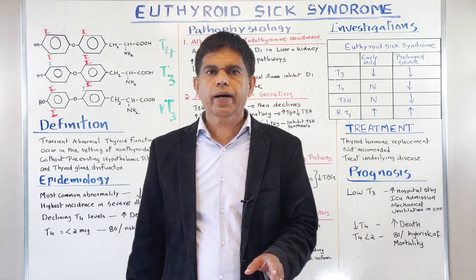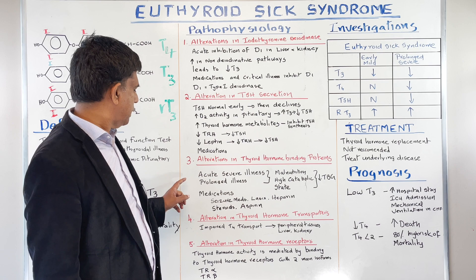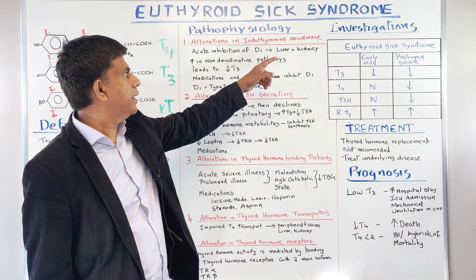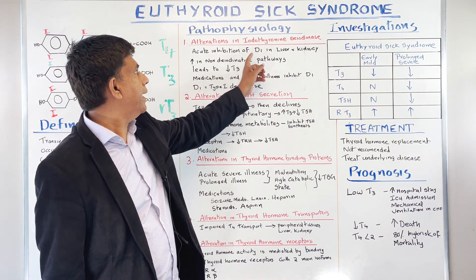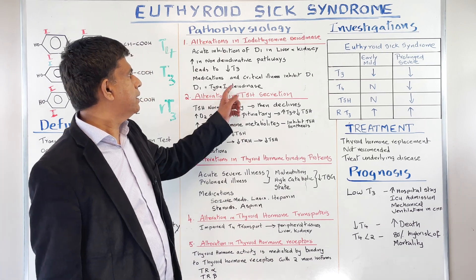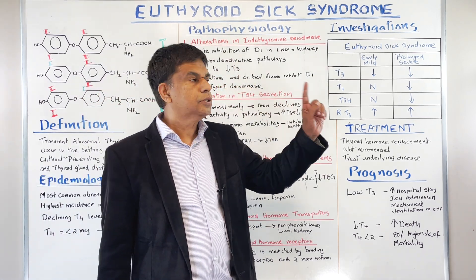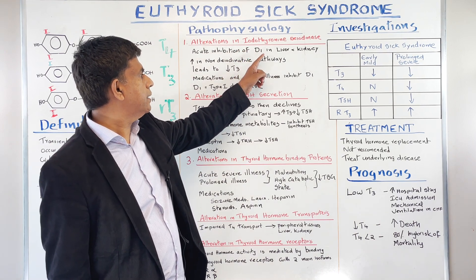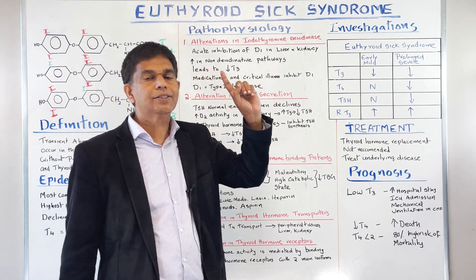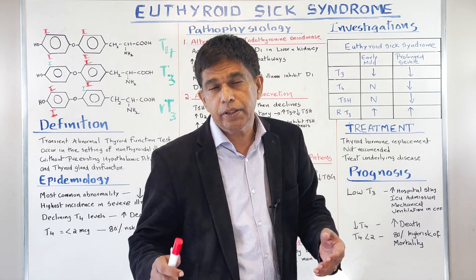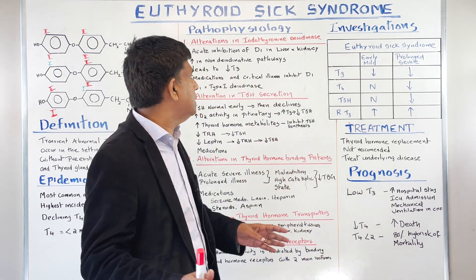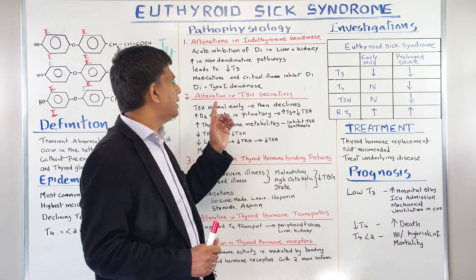Now let's look at the pathophysiology — five things you need to know. Number one: alteration in iodothyronine deiodinase. There is acute inhibition of D1 — type 1 deiodinase — in the liver and kidney. This leads to an increase in non-deiodinase pathways, involving sulfoconjugation, alanine side chain deamination, and decarboxylation. Those non-deiodinase pathways lead to decreased T3.